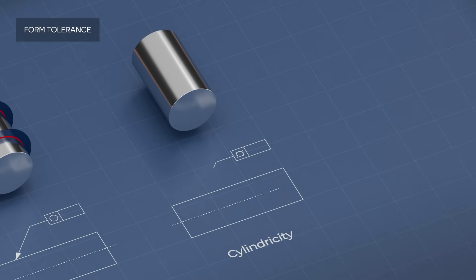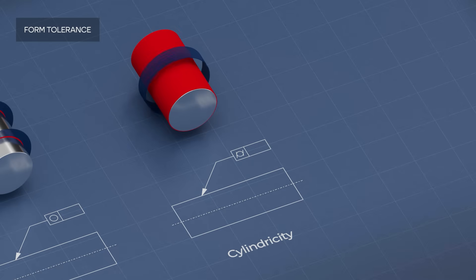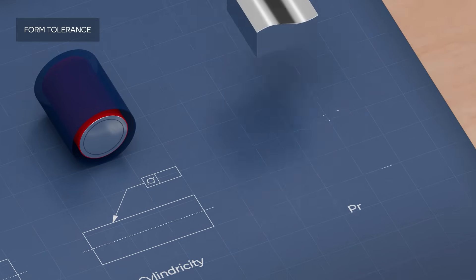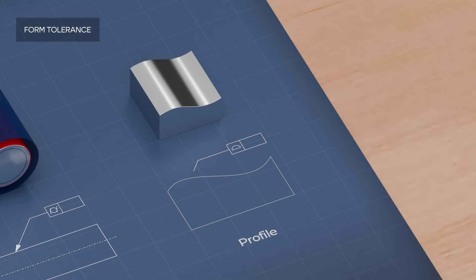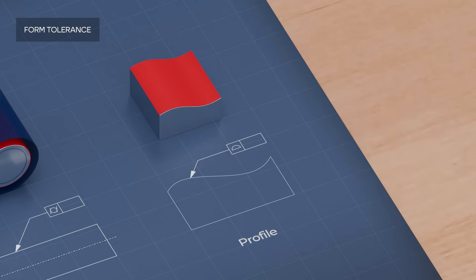Cylindricity is the same as circularity, except that instead of two circles, two cylinders define the tolerance zone. If the tolerated feature is neither a circle, nor a line, nor a flat plane, then we can use profile tolerance, so that the tolerated feature should lie between two offset shapes, each having the same shape as the tolerated profile itself but with an offset equal to the tolerance value.